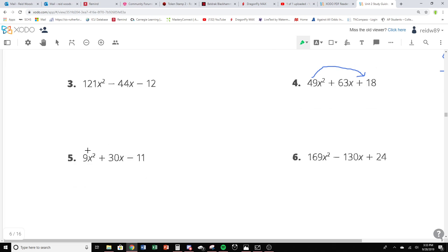So we're going to be starting this. Since we have a lead coefficient, we have this nine here. We have to remember that we're going to be doing slide and divide. We only do this when there is a number in the front. So I'm going to take that nine, slide it. This nine is going to multiply by the 11. So it's going to be x² + 30x - 99.